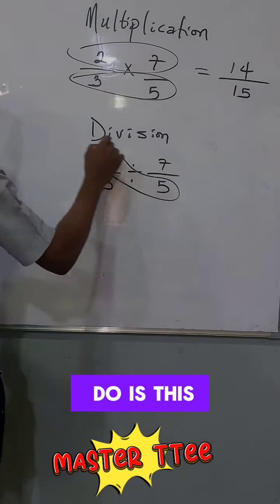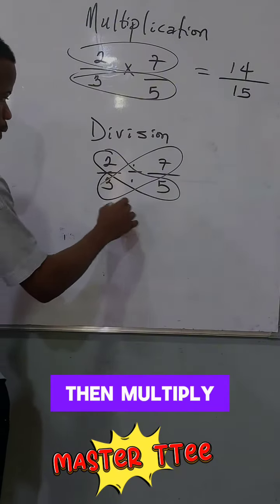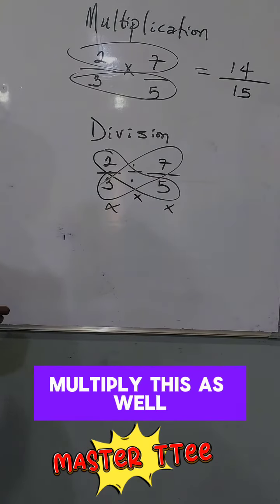All you have to do is this. Marry them this way. Then multiply, multiply. Then when you are done, multiply this as well. What do I mean?